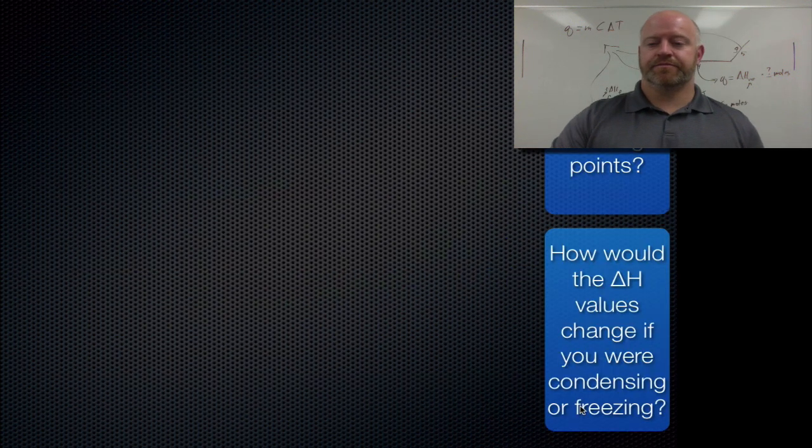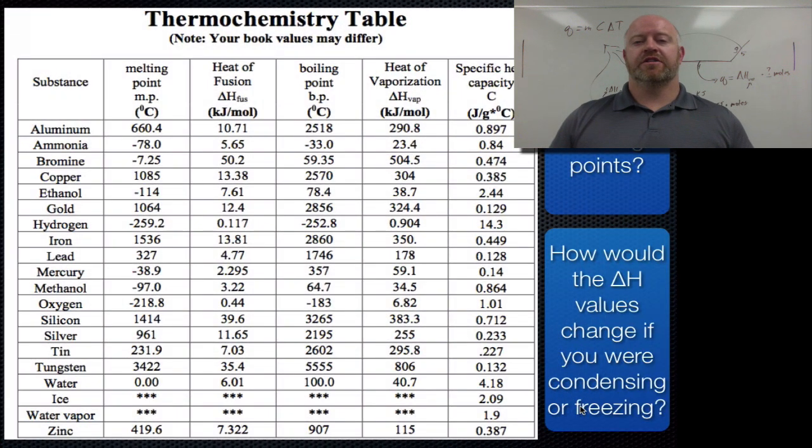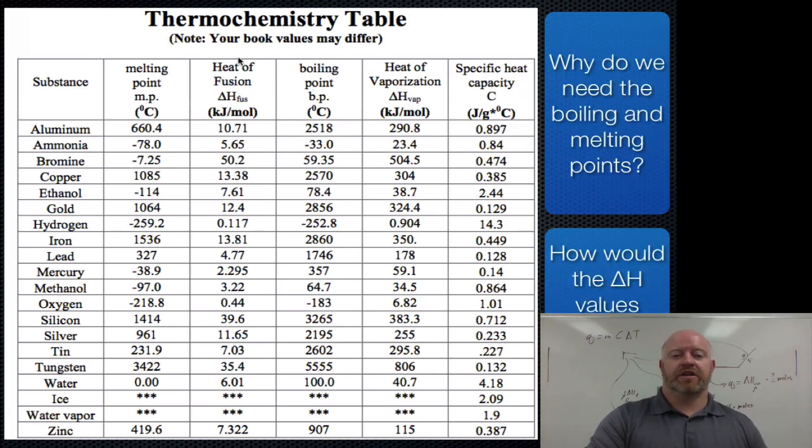Now, if you take a look at this table, this is a table that's in your website. It's on the website. You have access to. We may even have this exact same table on our test coming up. It gives us these different values. So here's your heats of fusion in kilojoules per mole labeled out for all your different substances. Here's your heats of vaporization.